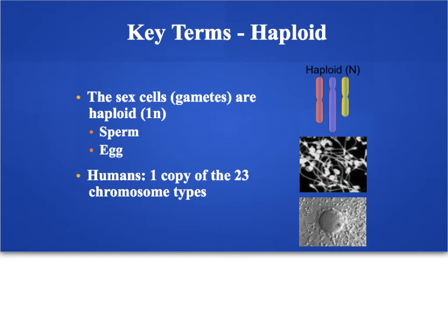Most of the cells in your body are diploid, but you do have some haploid cells. Haploid cells only have one copy of each chromosome — for example, sperm and eggs have only 23 chromosomes total. We refer to these cells as haploid or 1N, meaning one copy of the set of chromosomes. It's a good thing sperm and eggs are haploid, because when a sperm fertilizes an egg it adds its DNA to the egg's DNA. Starting with haploid 1N cells means after fertilization we end up with a 2N fertilized egg, which is exactly where we want to be to create a new individual.